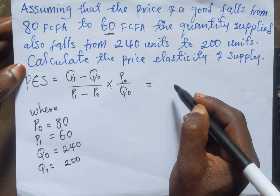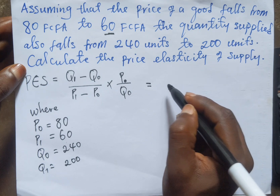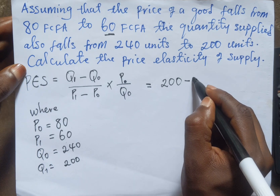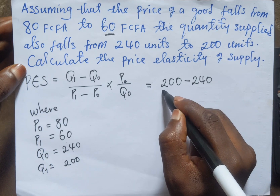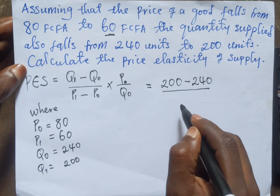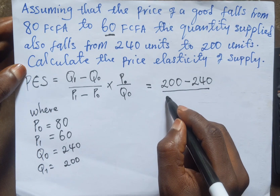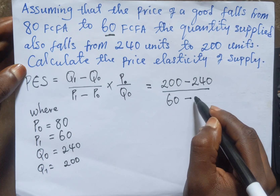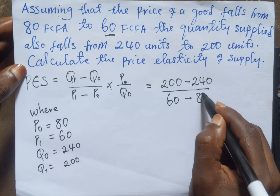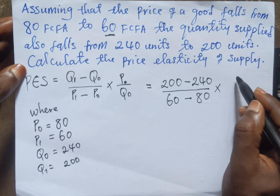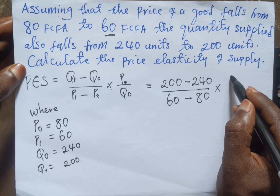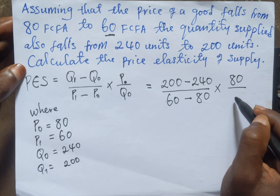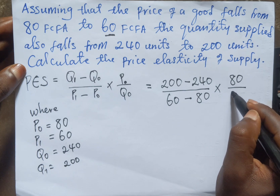Substituting into the formula, we have Q1 as 200 minus Q0 which is 240, divided by P1 which is 60 minus P0 which is 80, multiplied by P0 which is 80, divided by Q0 which is 240.